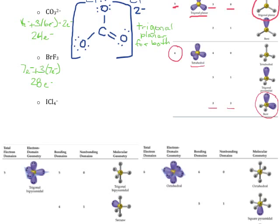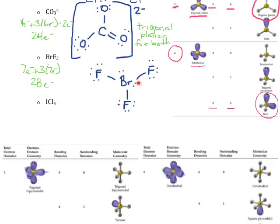I'll draw the Lewis structure the same way — bromine in the center with single bonds to the 3 fluorines, using 6 electrons. I fill each fluorine's octet with lone pairs. After completing all 3 fluorine octets, I still have 4 electrons remaining, so those go on the central bromine atom. You have to use all of the electrons you're given — once you've completed the octets on the outside atoms, any extra electrons go on the center.